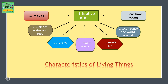Characteristics of living things: a living thing is alive if it moves, if it needs water and food, if it grows, if it makes waste, if it needs air, if it can sense the world around it, and if it can have young.